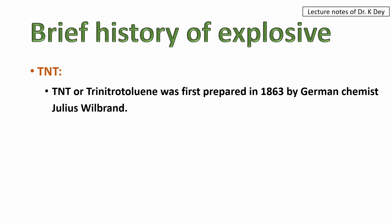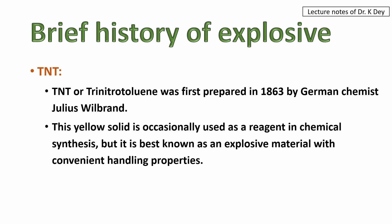Next is TNT, which means trinitrotoluene. It was first prepared in 1863 by German chemist Julius Wilbrand. This yellow solid is occasionally used as a reagent in chemical synthesis, but it is best known as an explosive material with convenient handling properties.